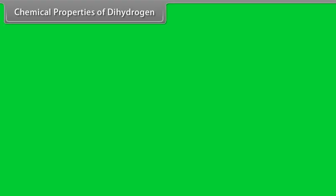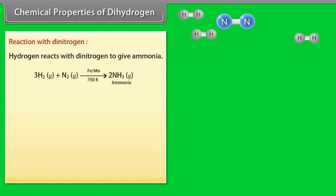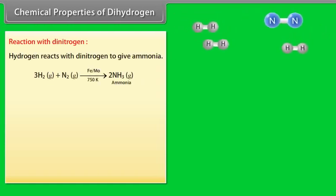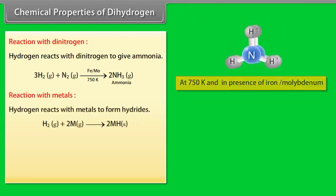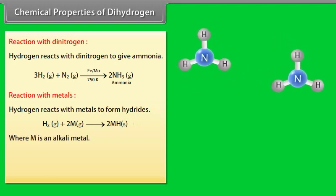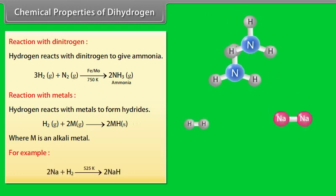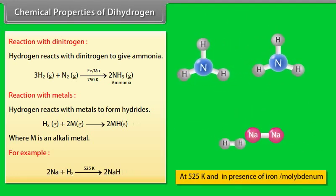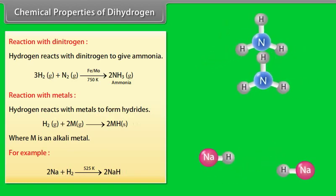Chemical properties of dihydrogen. Reaction with dinitrogen. Hydrogen reacts with dinitrogen to give ammonia. Reaction with metals. Hydrogen reacts with metals to form hydrides, where M is an alkali metal. For example, 2Na plus H2 on temperature 525 Kelvin gives 2NaH.